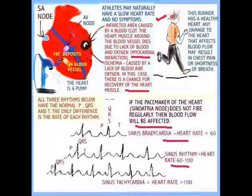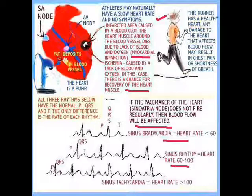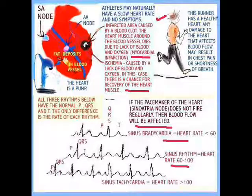Sinus bradycardia usually has a heart rate less than 60. Sinus rhythm is usually 60 to 100. And sinus tachycardia is usually greater than 100. The American Heart Association has guidelines in place for how each one is dealt with.